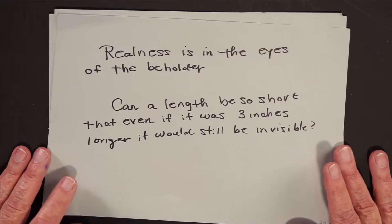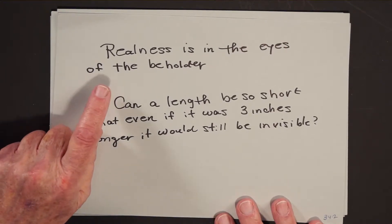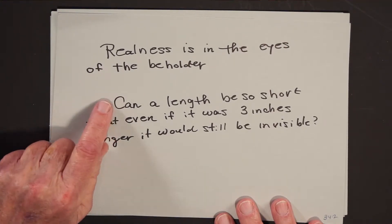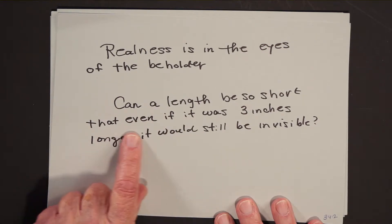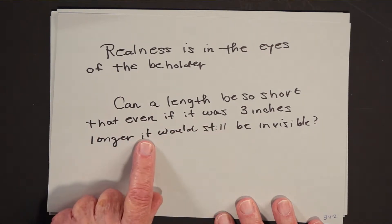Now, the question that comes up is, this is not a very difficult concept. The ancient Greeks were studying rational and irrational numbers, which were much more complicated. Yet the ancient Greeks did not study negative numbers. In fact, the numbers that we refer to as negative numbers, the ancient Greeks referred to as imaginary numbers. I like to call this: realness is in the eyes of the beholder. If you're visualizing numbers as being lengths, can a length be so short that even if it was three inches longer, it would still be invisible? Didn't make sense.